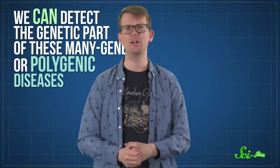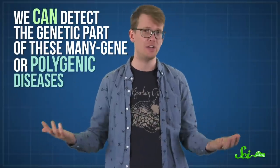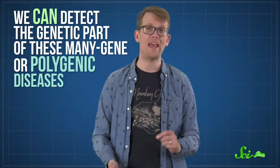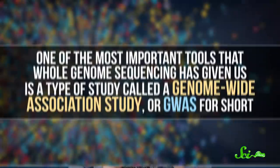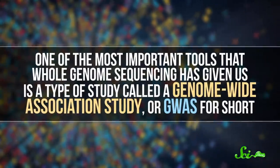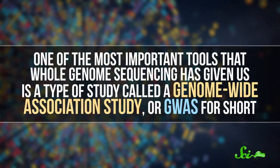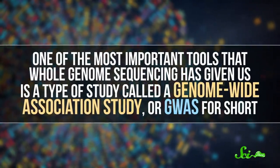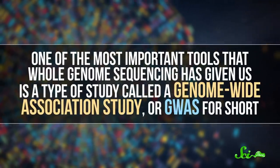We can detect the genetic part of these many-gene or polygenic diseases, though, now that we have the sequence of the human genome. One of the most important tools that whole-genome sequencing has given us is a type of study called a Genome-Wide Association Study, or GWAS for short.